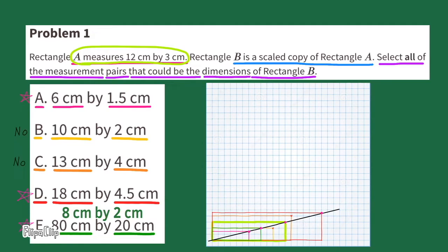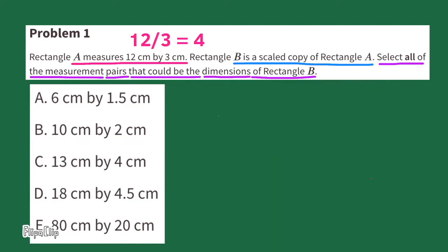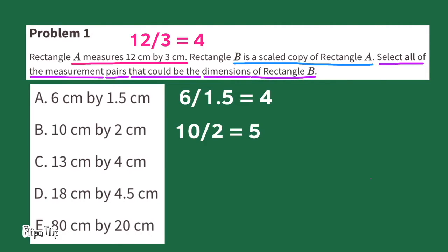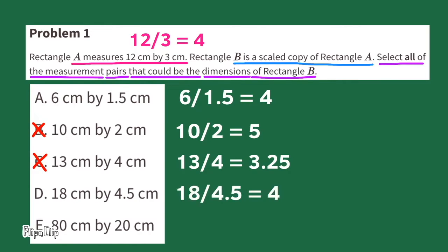Examples B and C are not scaled copies of Rectangle A, therefore they could not be Rectangle B. Here's another way to determine if a rectangle is a scaled copy without drawing it. Take the dimensions of the first rectangle, 12 by 3, and divide 12 by 3. 12 divided by 3 equals 4. Now do the same with the other examples: 6 divided by 1.5 equals 4; 10 divided by 2 equals 5; 13 divided by 4 equals 3.25. Anything that doesn't equal 4 is not a scaled version of Rectangle A. 18 divided by 4.5 equals 4, and 80 divided by 20 equals 4. So again, A, D, and E are all scaled versions of Rectangle A.